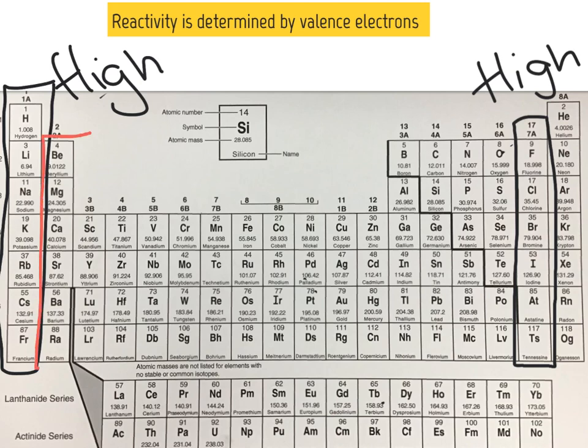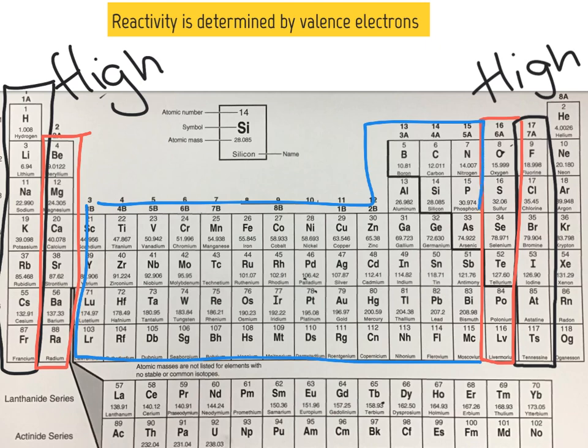As we work our way inwards, the reactivity on the periodic table actually begins to decrease. So groups 2 and group 16 are going to be less reactive than groups 1 and group 17. Moving in farther, groups 3 through 15 are going to be even less reactive than groups 2 and group 16.